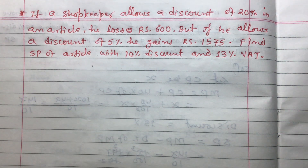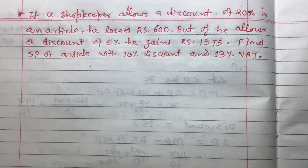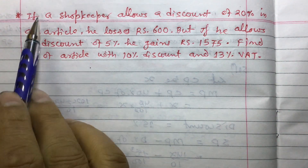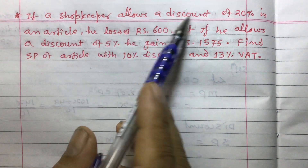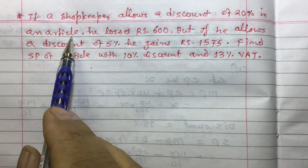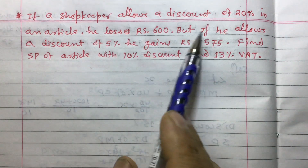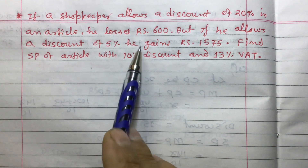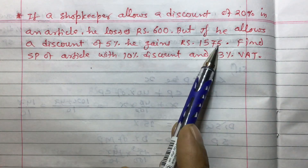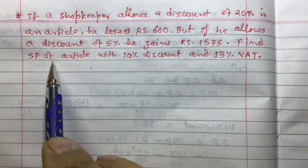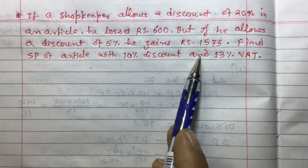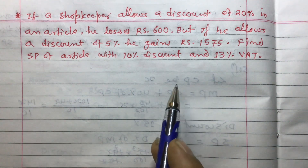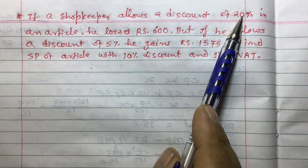Dear students, today I am going to teach you one question related to market price and VAT. The question is: if a shopkeeper allows a discount of 20% on an article, he loses rupees 600, but if he allows a discount of 5%, he gains rupees 1575. Find the selling price of the article with 10% discount and 13% VAT.